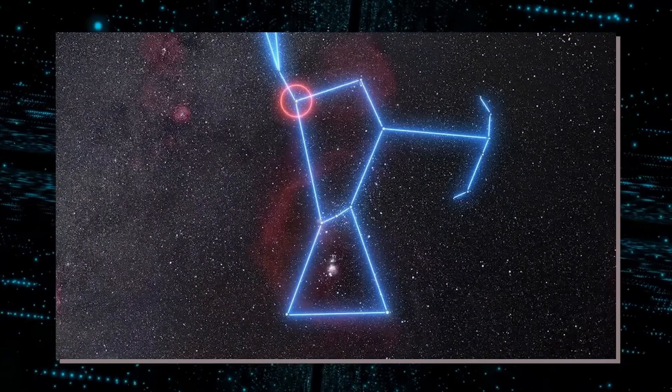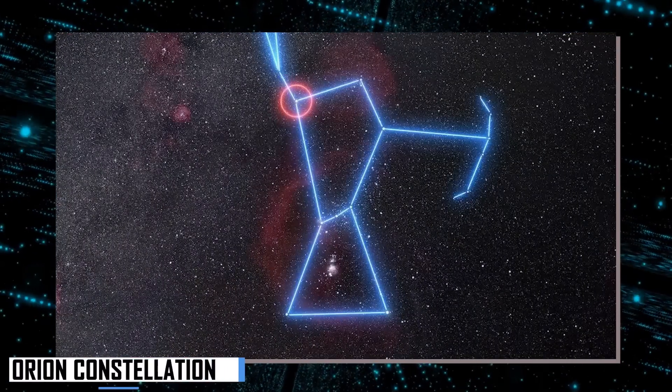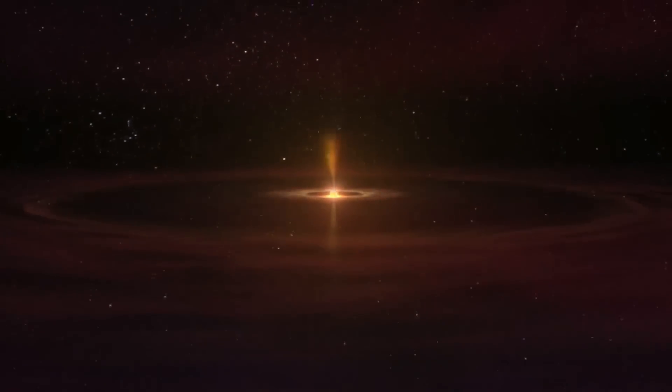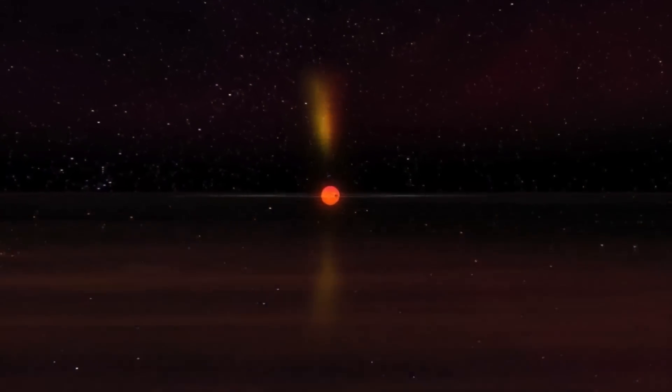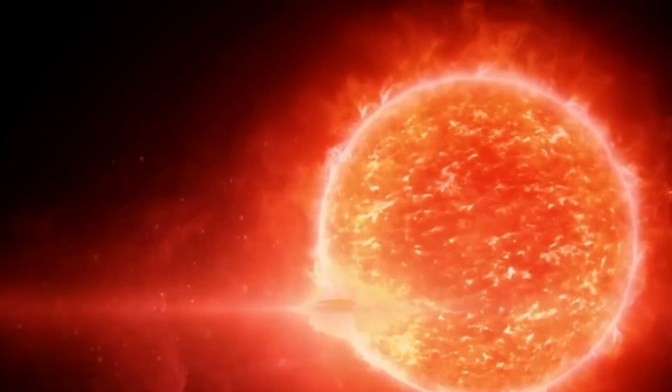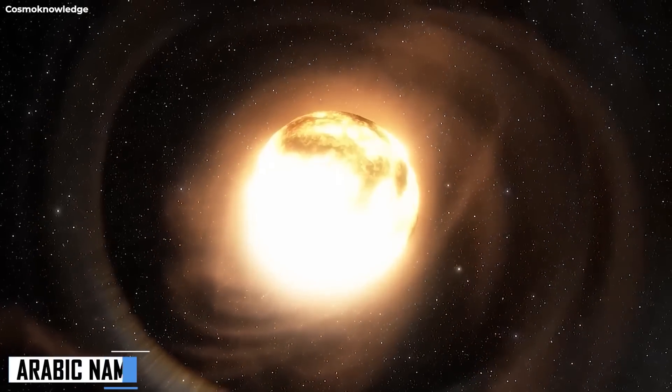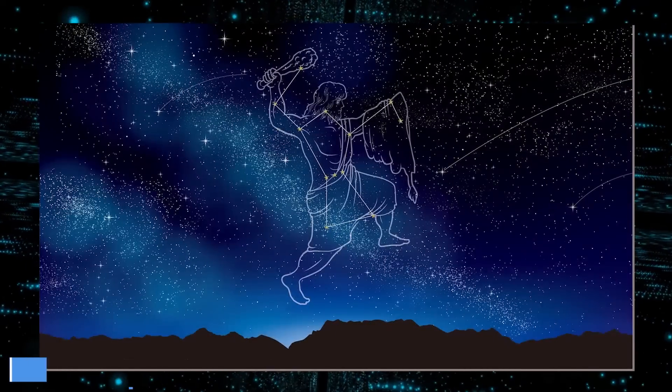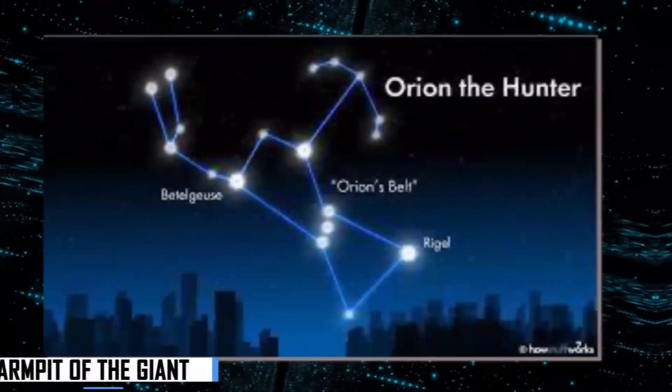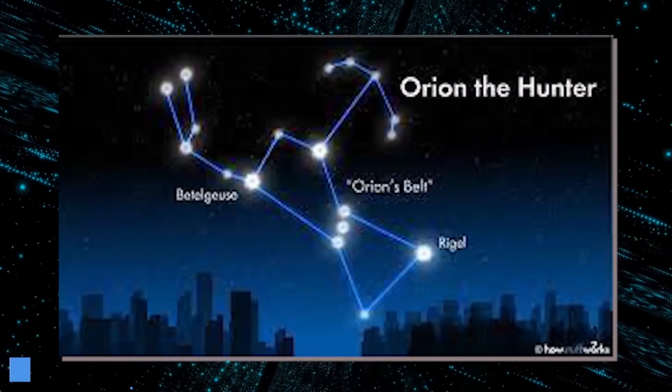Betelgeuse is located on the upper right shoulder of the Orion constellation. It is the second brightest star in the constellation after Rigel, and it has a distinct red hue that makes it stand out from the rest. The name Betelgeuse comes as a translation from the Arabic name for the star, and it literally means the armpit of the giant.